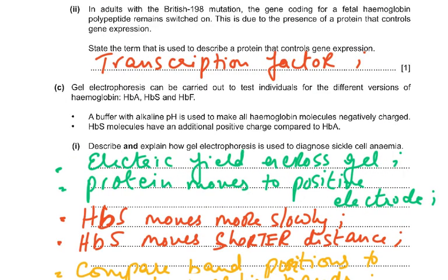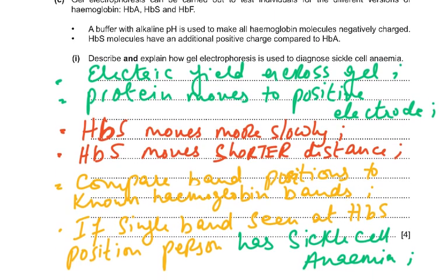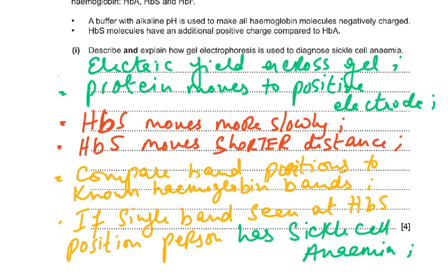In adults with the British 198 mutation, the gene coding for fetal hemoglobin polypeptide remains switched on due to a protein that controls gene expression — state the term: transcription factor. Then gel electrophoresis: a buffer with alkaline pH makes all hemoglobin molecules negatively charged. HbS has an additional positive charge compared to HbA. To diagnose sickle cell anemia: apply an electric field across the gel; protein moves to the positive electrode; HbS moves more slowly and travels a shorter distance; compare band positions with known hemoglobin bands. If a single band is seen at the HbS position, the person has sickle cell anemia.